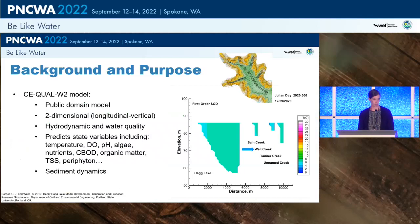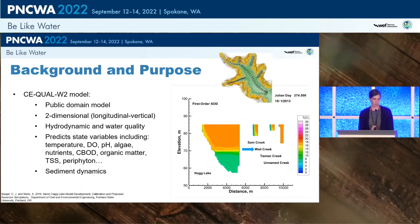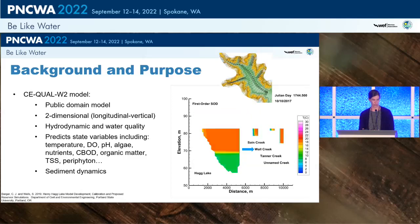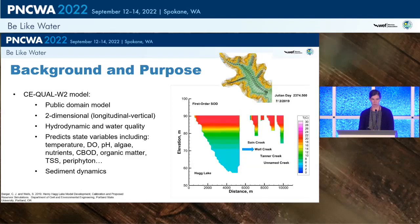We chose CE-QUAL-W2 as the model to use. It's a public domain model that has been around for 30 to 40 years, used worldwide for lakes, reservoirs, and rivers. It's very well suited for long water bodies as well as deep water bodies that stratify. It's two-dimensional — longitudinal and vertical — and laterally averaged. It predicts both hydrodynamics and water quality, and predicts state variables such as temperature, dissolved oxygen, pH, algae, nutrients, CBOD, generic constituents, metals, and tracers. It can also model different sediment dynamics.